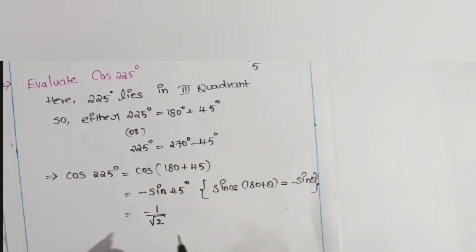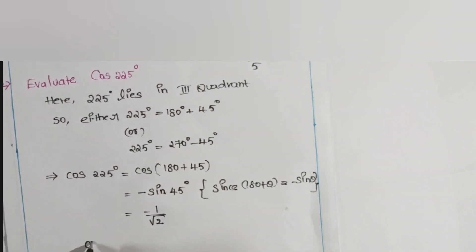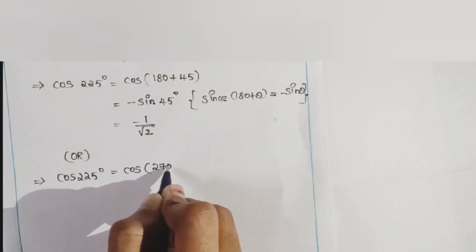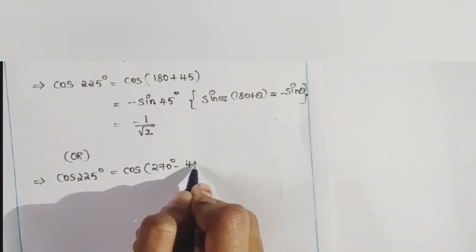So we can also do it in a different way. We can write 225 as 270° minus 45°. That means we can write cos 225° is equal to cos(270° - 45°).